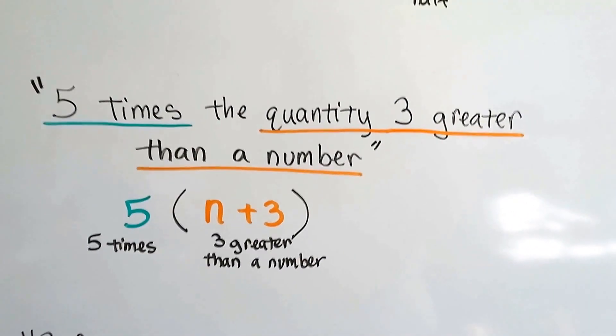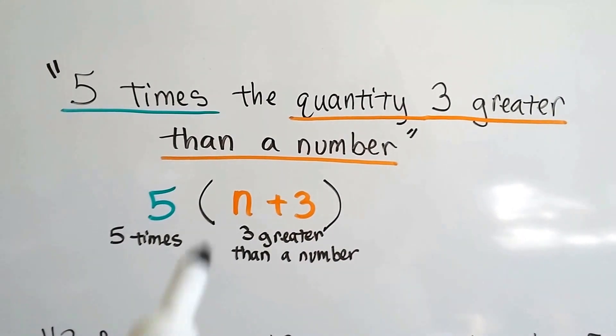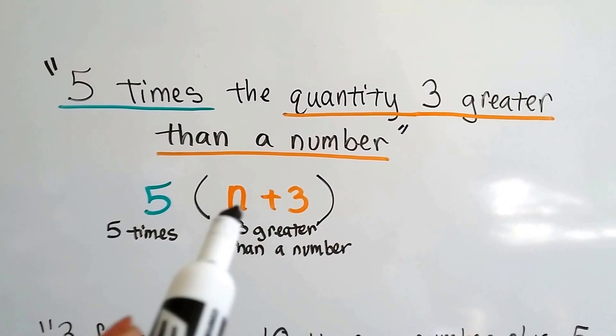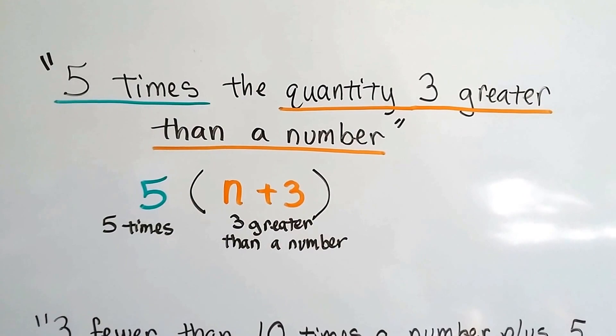What about five times the quantity three greater than a number? Three greater than a number would be that number plus three, wouldn't it? And five times that would be five times that number plus three.